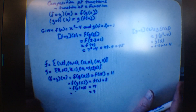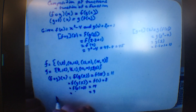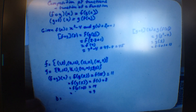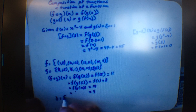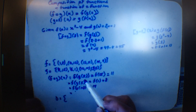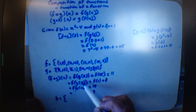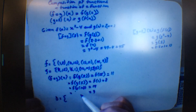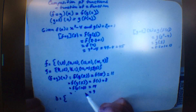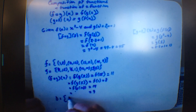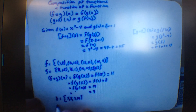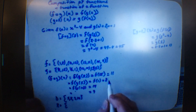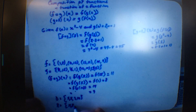The directions will ask for the domain and the range. The domain is all the values that you put in — we put in 5, 8, 9, and 10. The range is what we get back: 11, 8, 14, and 9.